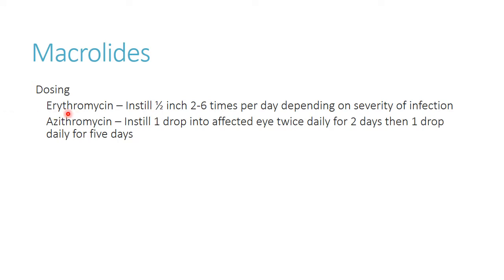The two main ocular macrolides you'll see are erythromycin and azithromycin. Erythromycin is much more common and is a good general all-purpose ocular antibiotic for most patients. It usually comes as an ointment — instead of instilling drops, you're writing prescriptions in inches, such as half an inch. Dosing is very frequent: two to six times a day depending on severity, which can be difficult for patients to keep up with. Azithromycin can be given less frequently due to its longer half-life, but it tends to be much more expensive.